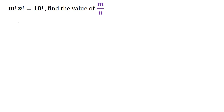Hello everyone, welcome to Root 2 Mathematics. In this video, we are going to solve this interesting Olympiad question. We have given m factorial multiplied with n factorial equals to 10 factorial, then find the value of m by n.